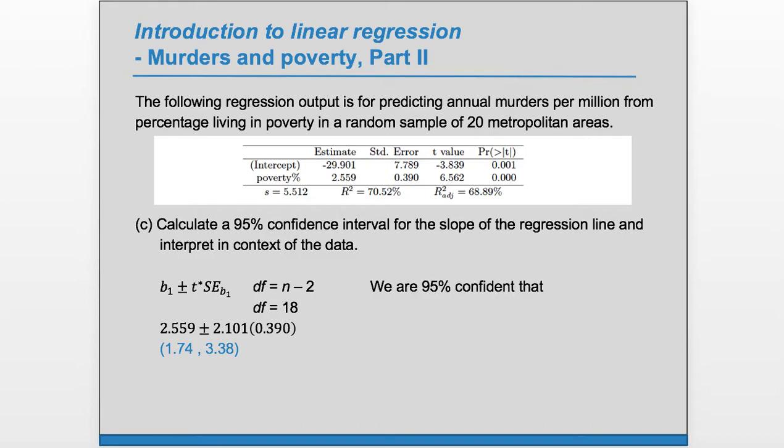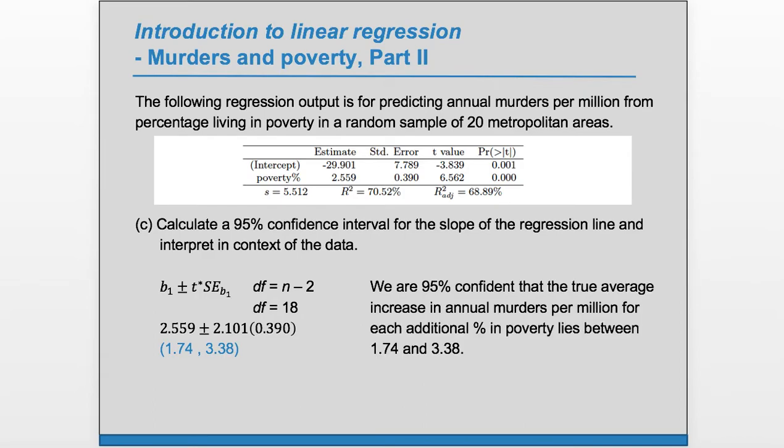Let's interpret this. We're 95% confident that the true slope lies between these values. We're 95% confident that the true average increase in annual murders per million for each additional percent in poverty lies between 1.74 and 3.38.